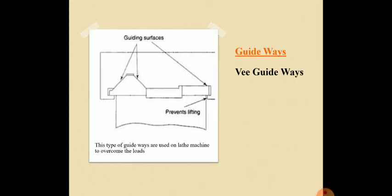First is V guideways. As you see from the figure, the V guideways have guiding surfaces and a gib to prevent the lifting of the guide. This type of guideway is used in lathe machines to overcome loads. One major advantage is that during parallel alignment of the guideways, the spindle axis is not affected by wear.